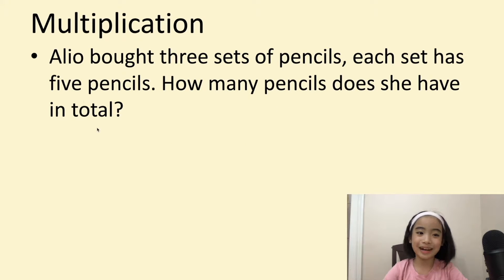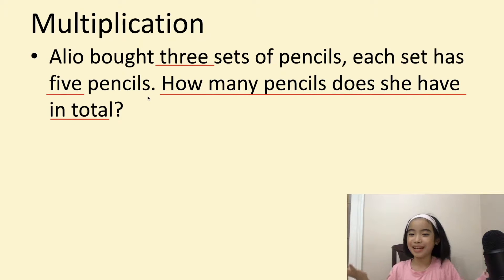First, let's do a multiplication word problem. Aliyo bought three sets of pencils. Each set has five pencils. How many pencils does she have in total? Before we solve this question, there is some very important information in this word problem. It is three and five. And, of course, the question: How many pencils does she have in total?